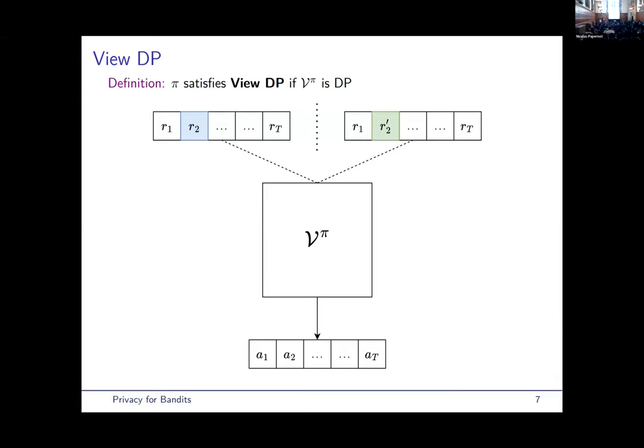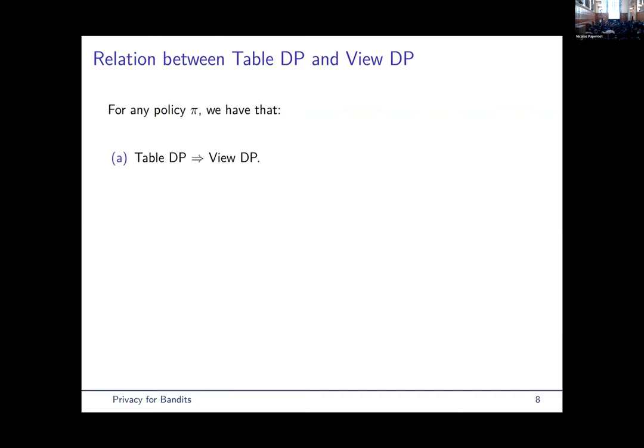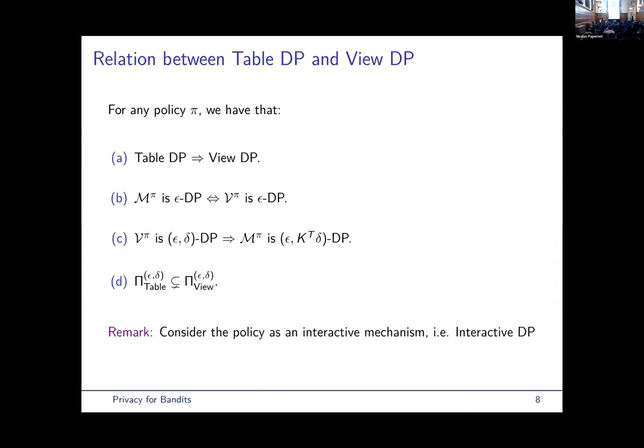And that's what motivates the second definition, which is to be only differentially private on the observed rewards. So, a policy is view DP if the distribution over sequence of recommended actions, again, are similar when we only change one observed reward. So, what we show is that table DP always implies view DP with the same privacy budget. These two definitions are exactly equivalent for pure DP. But for epsilon-delta DP, the conversion from view to table DP happens with a loss in the parameter delta due to some group privacy considerations. And actually, these two definitions, we show that they are not exactly equivalent for epsilon-delta DP. So, we show that the class of epsilon-delta DP, table DP policies are strictly included in the epsilon-delta view DP. We also show some ways to extend the interactive DP definition for policies due to the time constraints. I will not talk about them, but I'm happy to talk about them in the poster session.